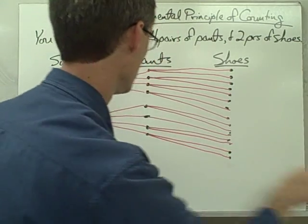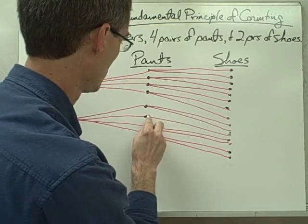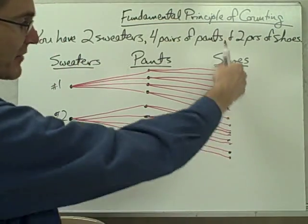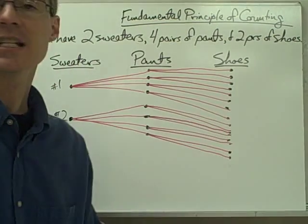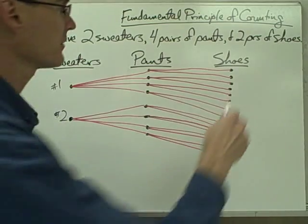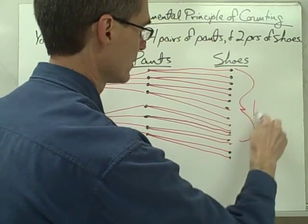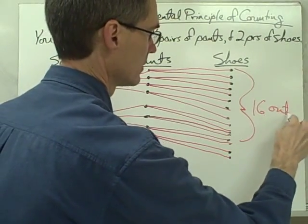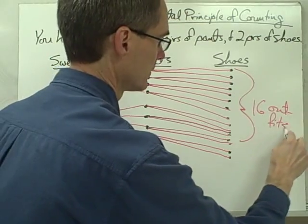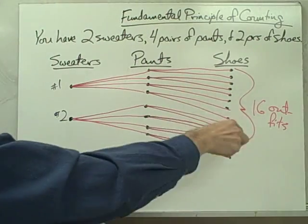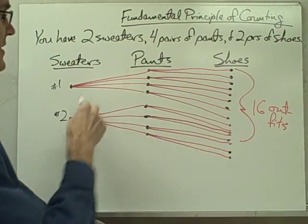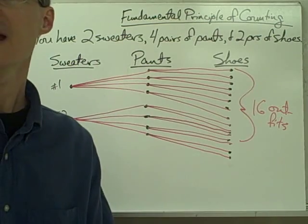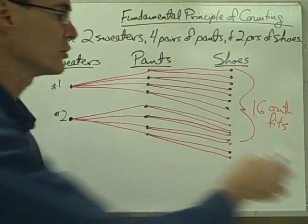I have a pair of shoes here I missed. So I'm going to have a total of 16 different possible outfits — 16 possible outfits that I can put together using my two sweaters, four pairs of pants, and two pairs of shoes.